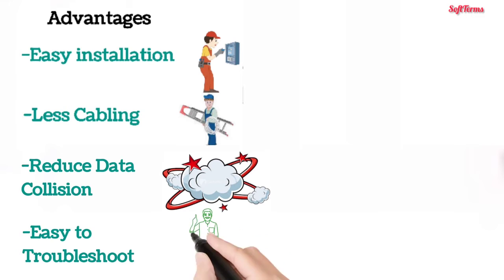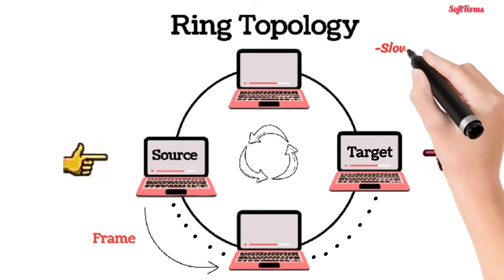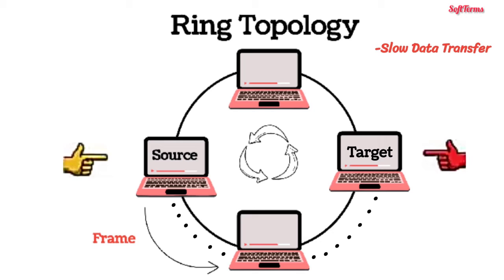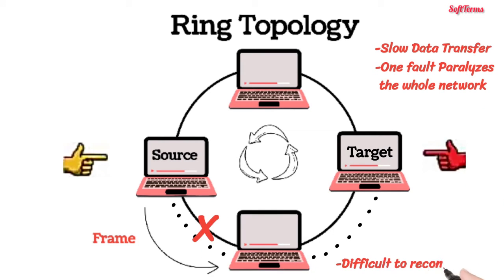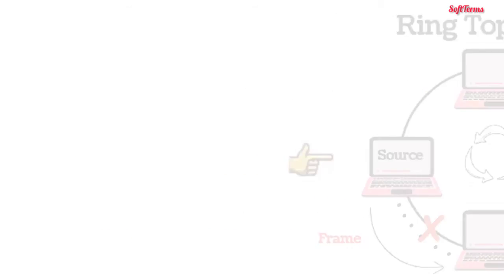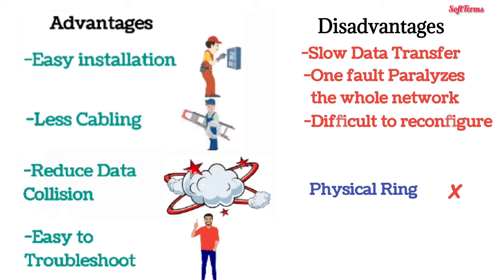The ring topology is relatively easy to troubleshoot because we only need to locate a computer that has stopped receiving data from its upstream neighbors. However, as each data frame has to pass through all computers between the source and destination, it makes data transmission slower than star topology. Since all computers connect to form a closed loop, one fault paralyzes the whole network. It is difficult to reconfigure because we need to break the ring to add or remove a computer. Due to this reason, physical ring topology is rarely used; instead, logical ring topology is used.